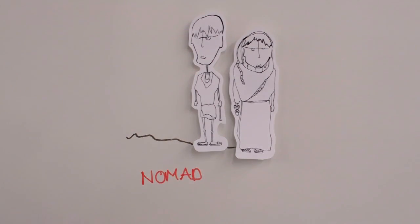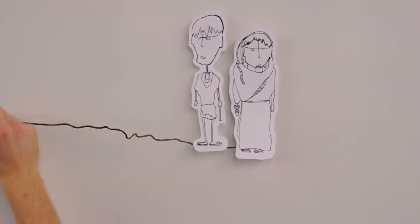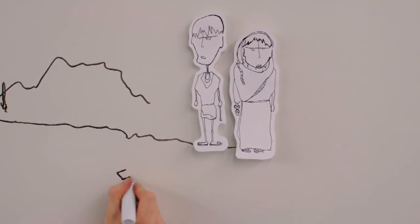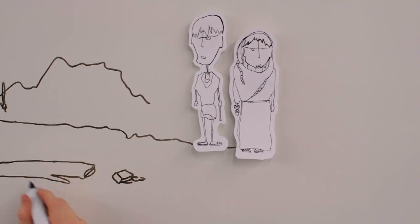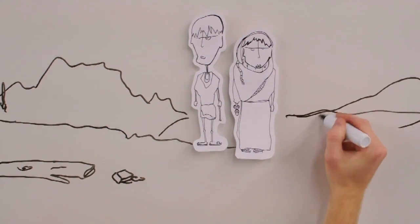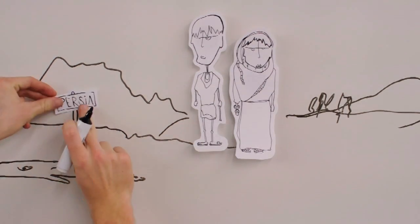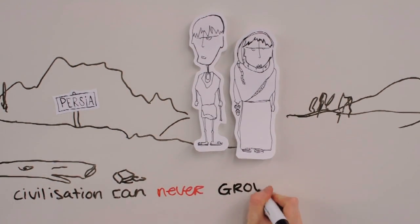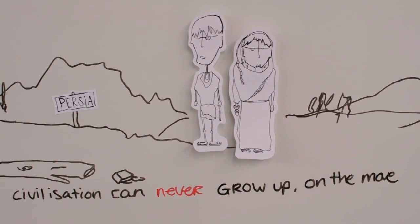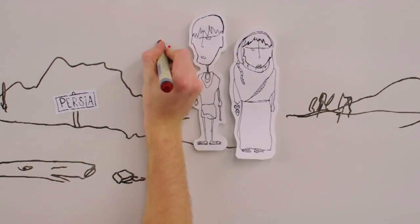There are some nomad tribes who still go through these vast transhuman journeys from one grazing ground to another. The Bakhtiari in Persia, for example. And you have actually to travel with them and live with them to understand that civilization can never grow up on the move. Everything in nomad life is immemorial.